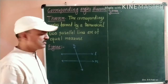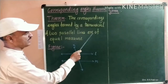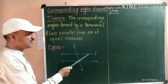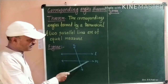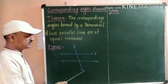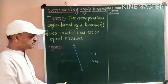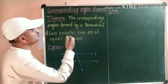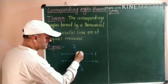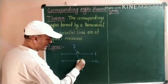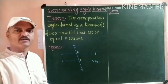For that, I draw a figure here. There are two parallel lines given, so we draw line L and line M. Line N is the transversal of these two lines. Because of this transversal, two corresponding angles are formed. Suppose this is angle A and this is angle B. These two angles are one pair of corresponding angles.